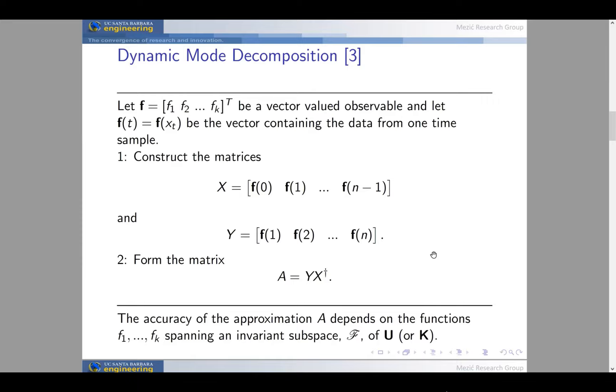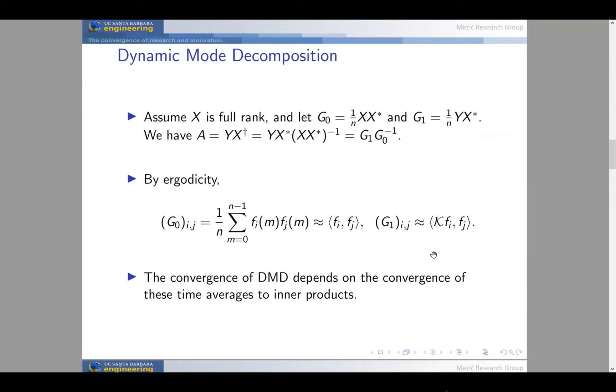That is going to be the approximation of K, matrix A, in this algorithm. The accuracy of the approximation depends largely on the functions f1 up to fk spanning an invariant subspace of U or K, depending on if it's deterministic or stochastic. This algorithm can be shown to converge to U or K, if we have an invariant subspace, as the data gets large. But it does run into issues with noise.